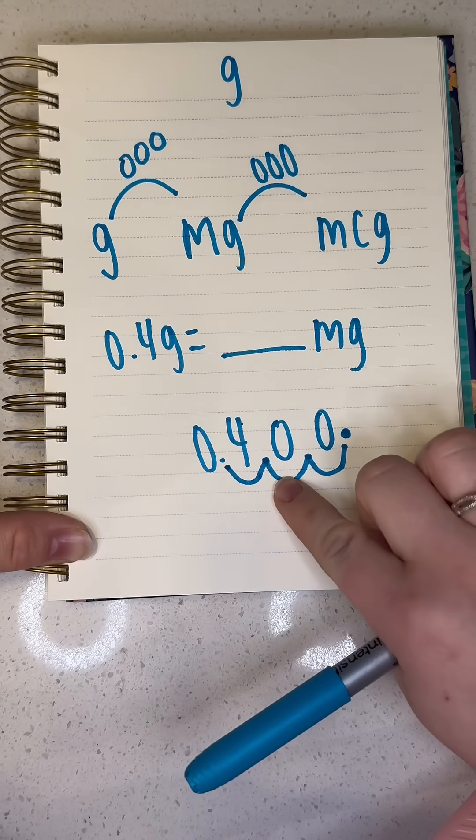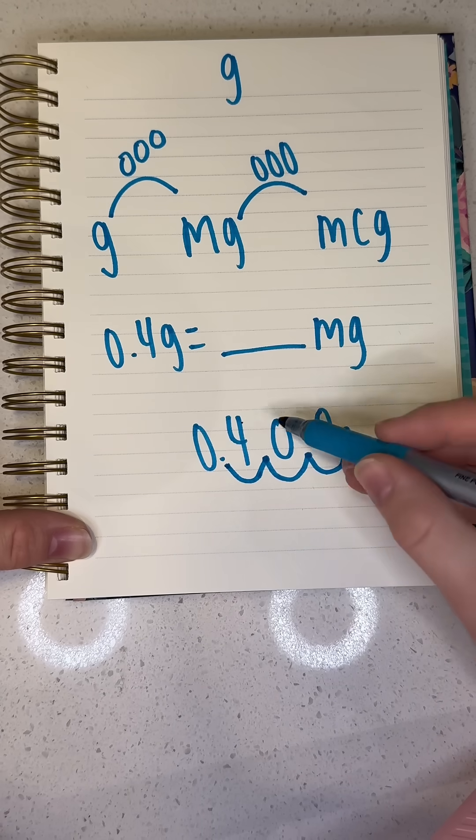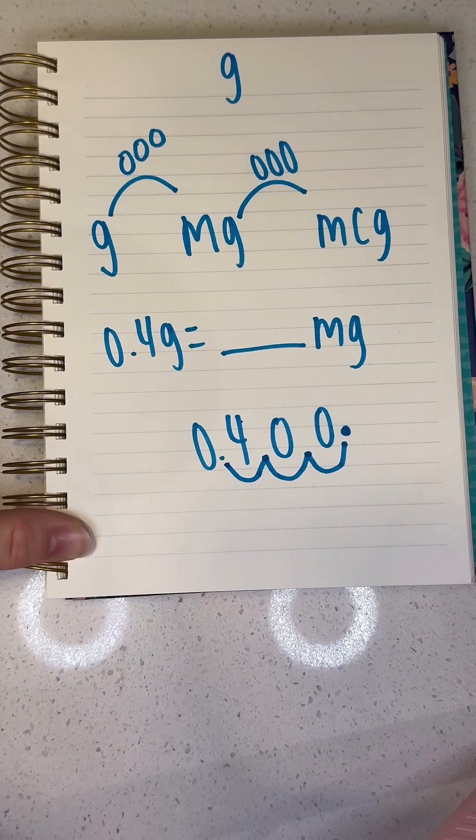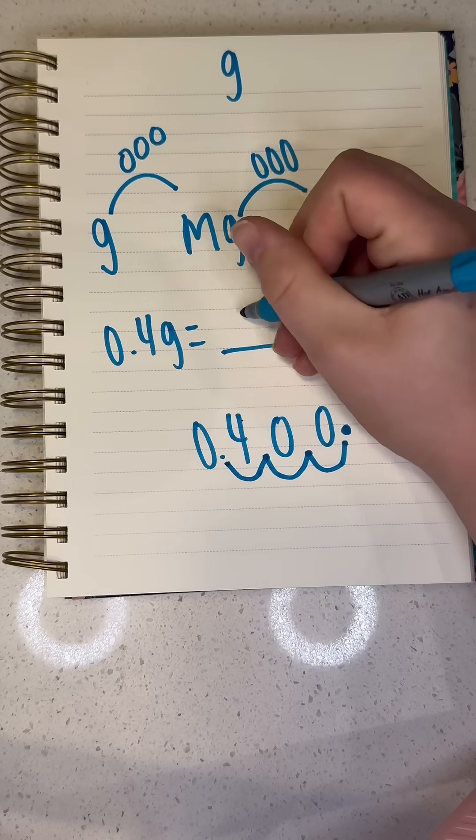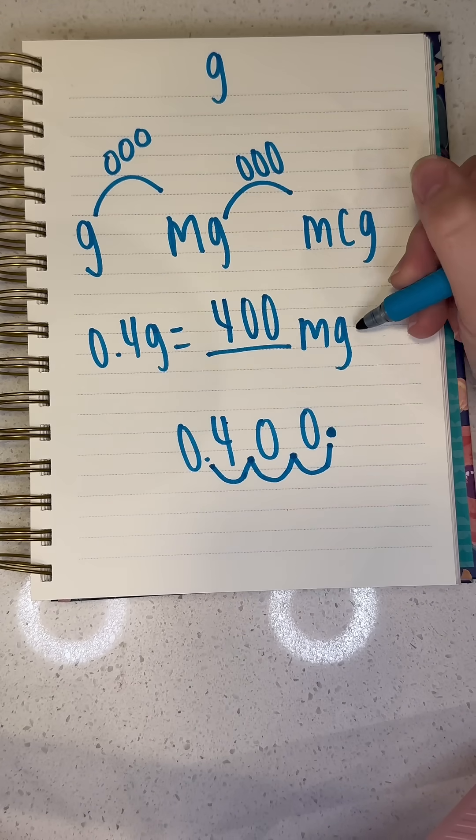So each one of these is a zero. So since there were two open spaces, I put two zeros and the decimal point right there. Now I know that 0.4 grams equals 400 milligrams.